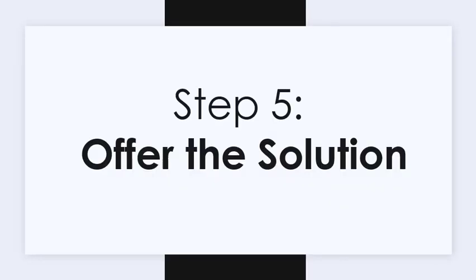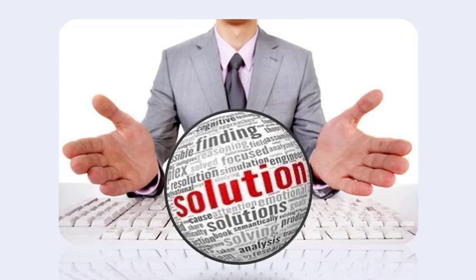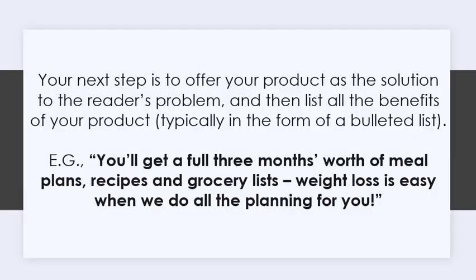Step 5: Offer the solution. Your next step is to offer your product as the solution to the reader's problem, and then list all the benefits of your product, typically in the form of a bulleted list. For example: "You'll get a full three months' worth of meal plans, recipes, and grocery lists. Weight loss is easy when we do all the planning for you."